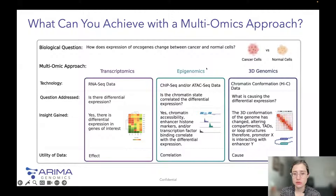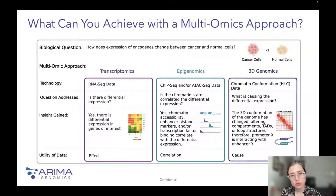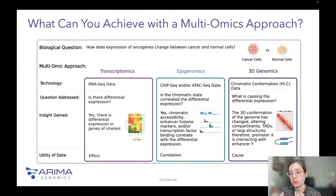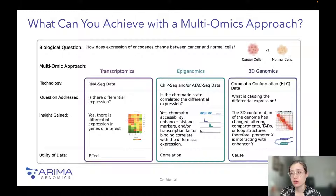Say you have a biological question about how oncogene expression changes between cancer and normal cells. With a multi-omics approach, RNA-seq can tell you whether there is differential expression. Epigenomics — ChIP-seq assays for protein binding or ATAC-seq for open/closed chromatin — can answer whether the chromatin state is different. But if you also add 3D genomics, you can understand the cause of those changes. The question 3D genomics addresses is: what is causing this differential expression?